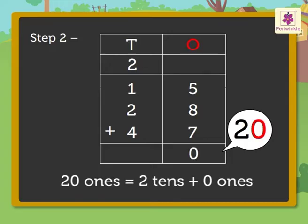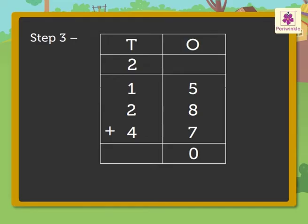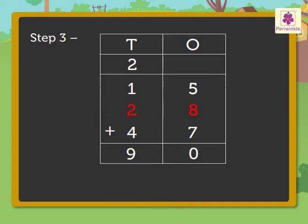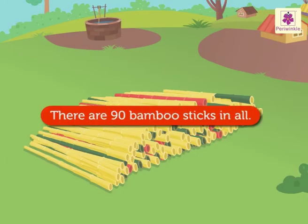Step three: add the tens — that is, 2 plus 1 plus 2 plus 4, which is equal to 9. Write 9 under the tens column. So we get the answer as ninety. Fifteen plus twenty-eight plus forty-seven is equal to ninety. Thus there are ninety bamboo sticks in all.